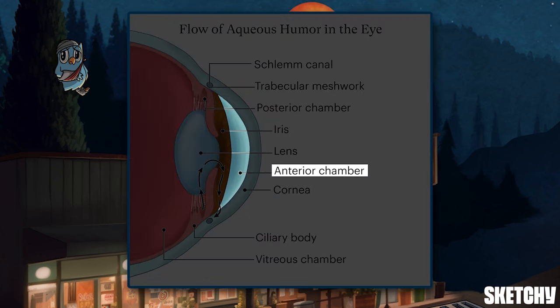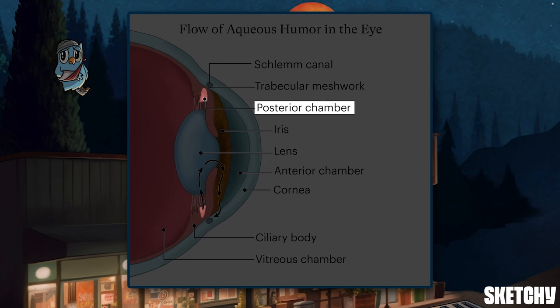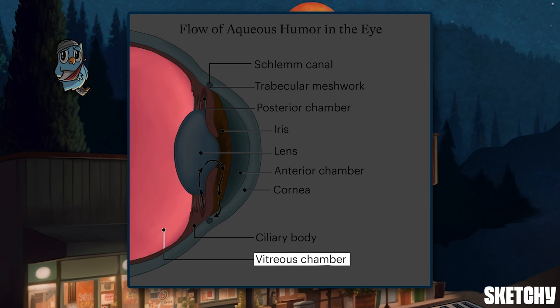The anterior chamber sits between the cornea and the iris. The posterior chamber is located between the iris and the lens. And the vitreous chamber is the area between the lens and the back of the eye, the retina.